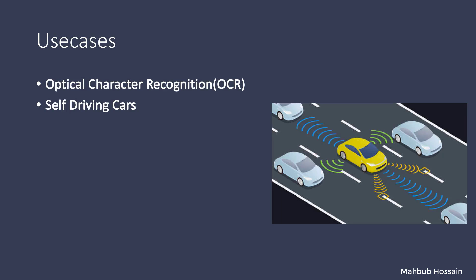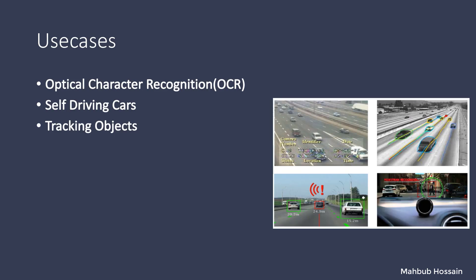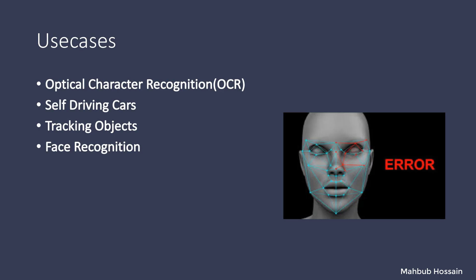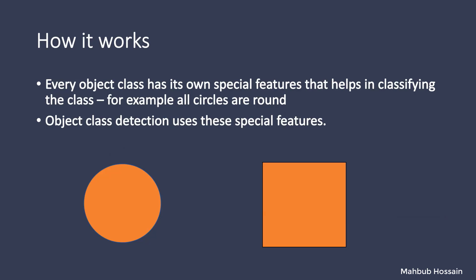Object tracking, such as tracking vehicles and activity tracking, all of this requires object detection. Another most useful application is face recognition. Face recognition has a lot of applications including security. So how does object detection work?